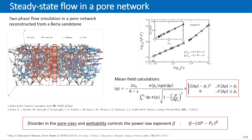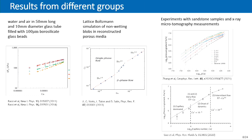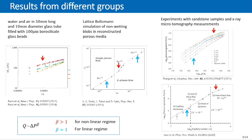All these results are also supported by different groups. These include experimental results, lattice Boltzmann simulations, and three separate experimental results, all showing the non-linear regime at intermediate capillary numbers and the linear regime at high capillary numbers. Different groups have reported different regimes. We mostly focused on the non-linear regime at intermediate capillary numbers and the linear regime, but there is also a non-linear regime at low capillary numbers which has been studied only limitedly.